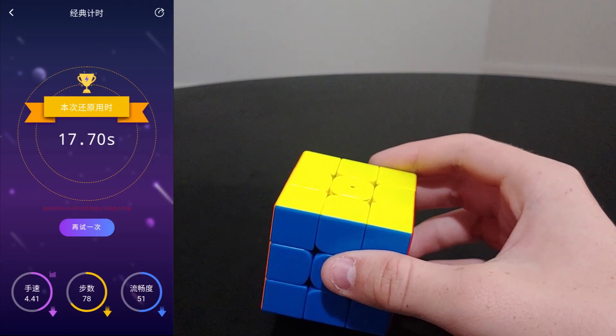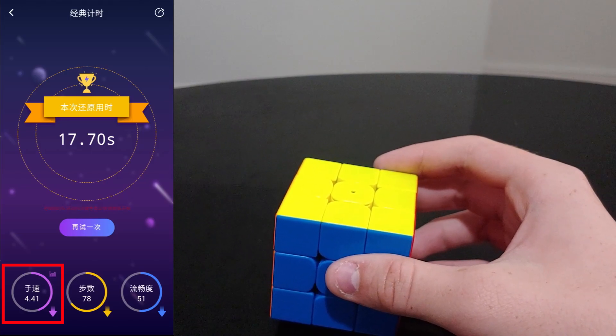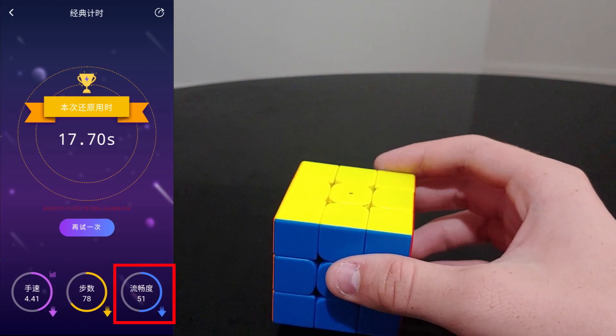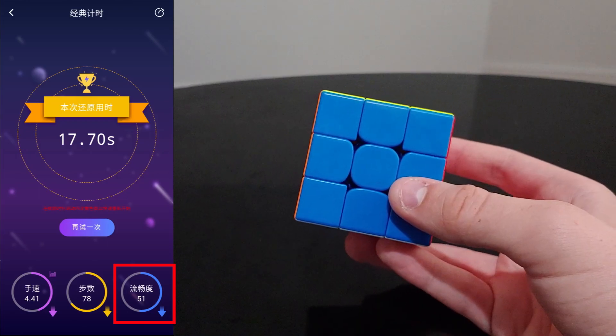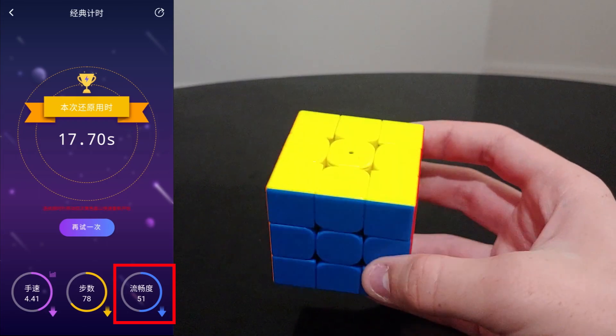And as far as I can tell, the left stat is TPS, the middle is move count, and the right is fluency, which is the amount of time during the solve that you are actually turning.